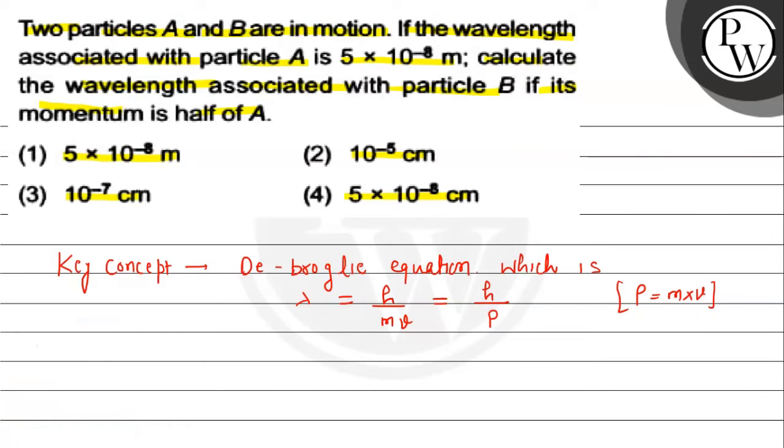First, for particle A, Lambda A will be h upon momentum, and we'll call this equation number 1.